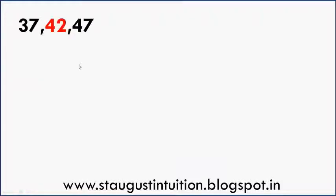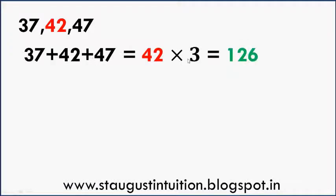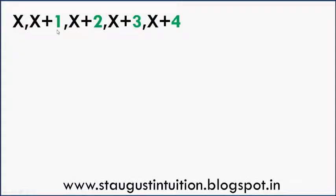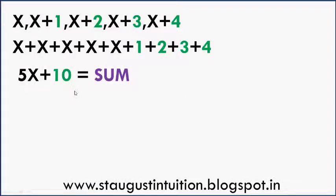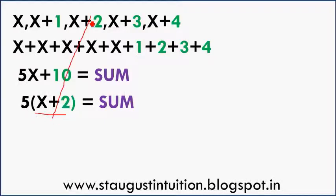For example: 37, 42, 47. Just multiply 42 into 3. Next example: x plus 1, x plus 2, x plus 3, x plus 4, x plus 5 — five terms. 5x plus 10 equals 5 times the middle term. This is the middle term.